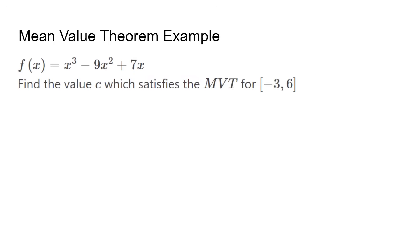In this example problem, the first step would be finding the average rate of change, f of 6 minus f of negative 3 over 6 minus negative 3. We plug into the function and the average rate of change is 7. Next, we find f prime and see what value of x gives us 7. Our answer is c equals 0.